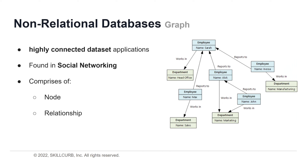A graph database's purpose is to make it easy to build and run applications that work with highly connected data sets. Typical use cases include social networking, recommendation engines, fraud detection, and knowledge graphs. The basic building blocks of a graph data model are nodes and relationships. A node represents an entity — a place, person, thing, or category — and relationships represent how two nodes are associated. For example, a social media profile is represented as nodes, with relationships shown as arrows connecting the nodes.